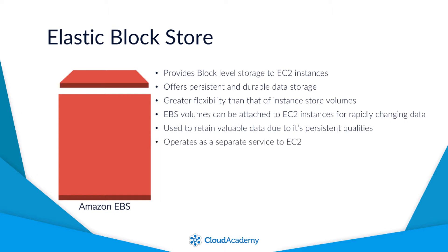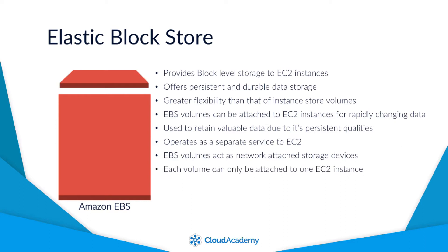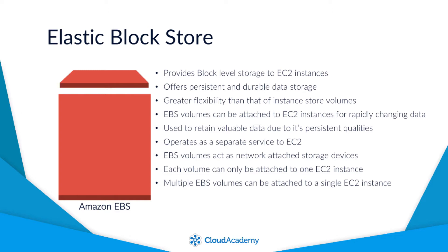EBS volumes are independent of the EC2 instance, meaning that they exist as two different resources. They are network attached to the instance instead of directly attached like instance store volumes. However, a single EBS volume can only ever be attached to a single EC2 instance. Multiple EBS volumes can, however, be attached to a single instance.